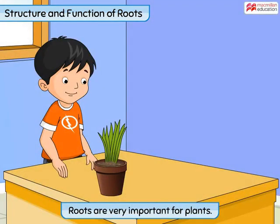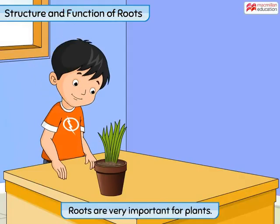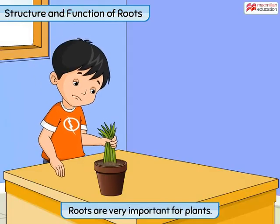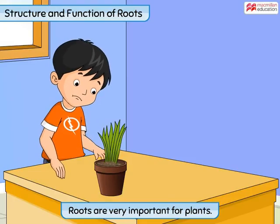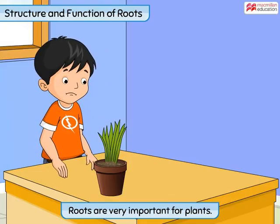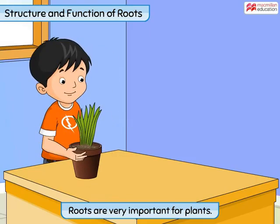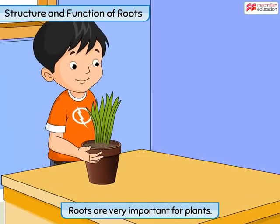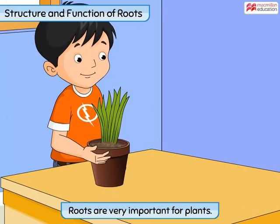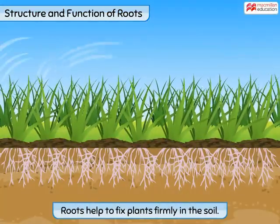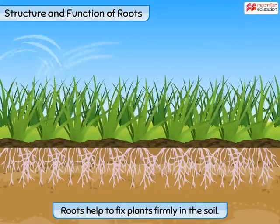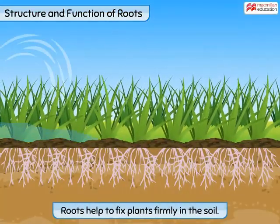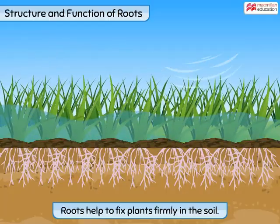Roots are a very important part for plants. Look at this boy trying to pull out a bunch of grass from the soil. He tries to pull the grass, but the plants do not come out easily, and the boy ends up lifting the pot. This shows that roots of the grass plants are holding them firmly in the soil. Thus, the roots function to prevent the plants from being uprooted by fast wind and flowing water.